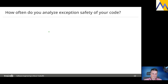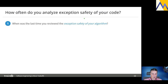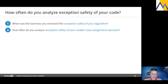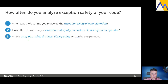Here comes the question: how often do you analyze exception safety of your code? When was the last time you reviewed exception safety of your algorithm? How often do you analyze exception safety of your custom-written class assignment operator? Or which exception safety guarantee does the latest library utility you've written provide? Did you ask these questions to yourself after writing some code?